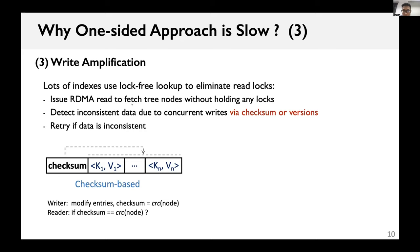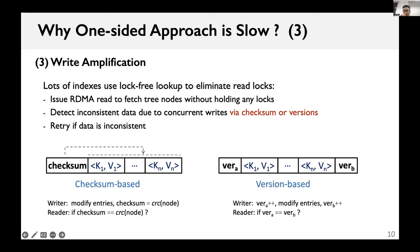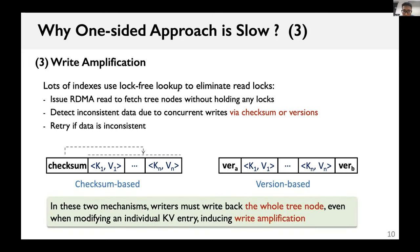Each tree node includes a checksum covering the whole node area. The checksum is recalculated when modifying the associated node and verified when reading the node. The other mechanism stores a version number at the start and the end of each tree node. When modifying a tree node, both versions are incremented. A tree node fetched by RDMA read is consistent only when the two versions are the same. In both mechanisms, writers must write back the whole tree node even when modifying a single key entry, inducing write amplification and consuming network bandwidth.